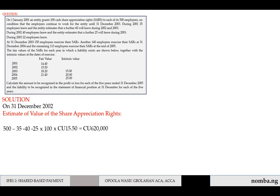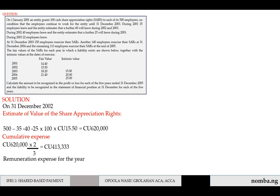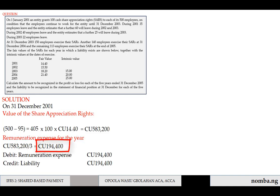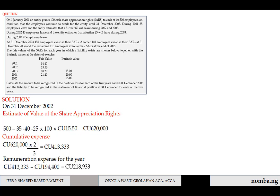The cumulative expense at the end of 2002 is 620,000 × 2/3 = 413,333. The remuneration expense for the current year is 413,333 − 194,400 = 218,933. We debit remuneration expense and credit liability with 218,933.